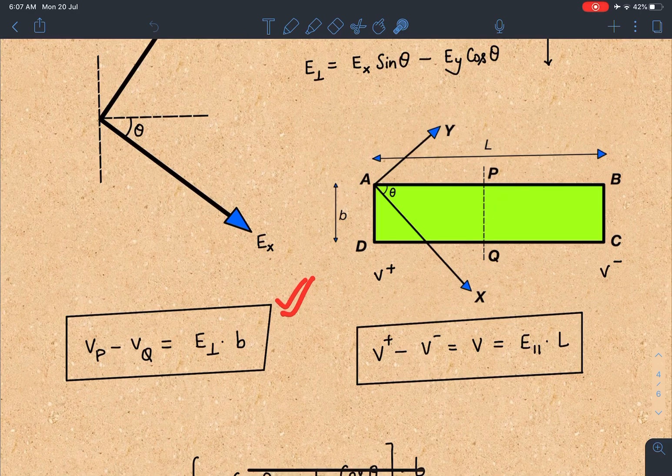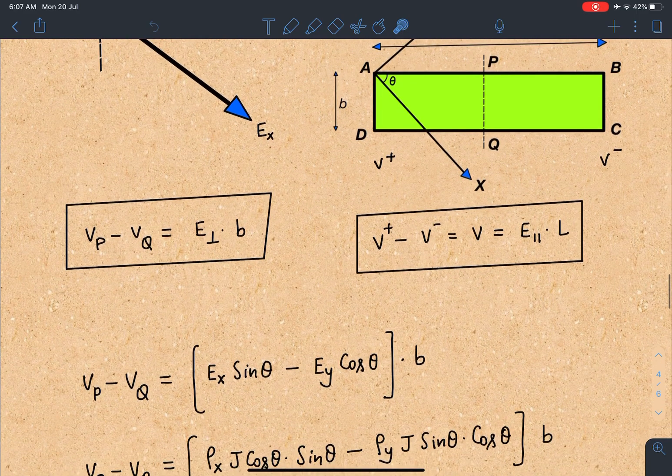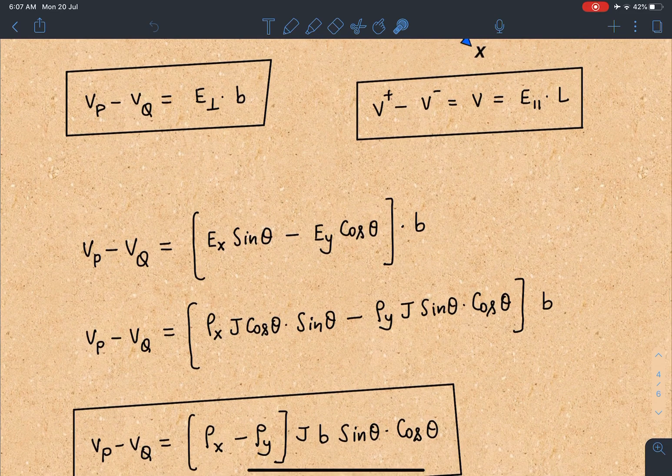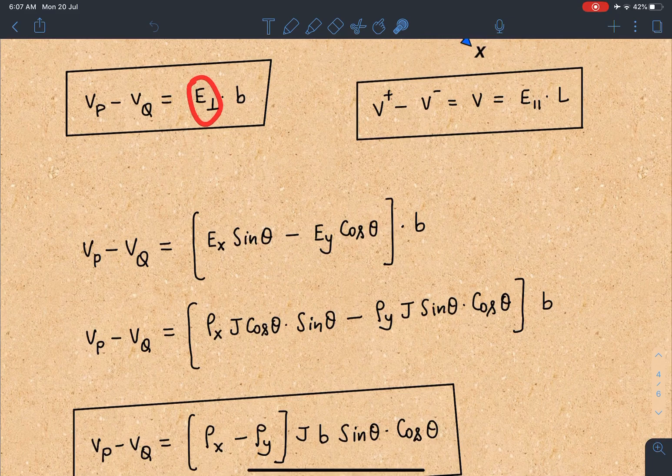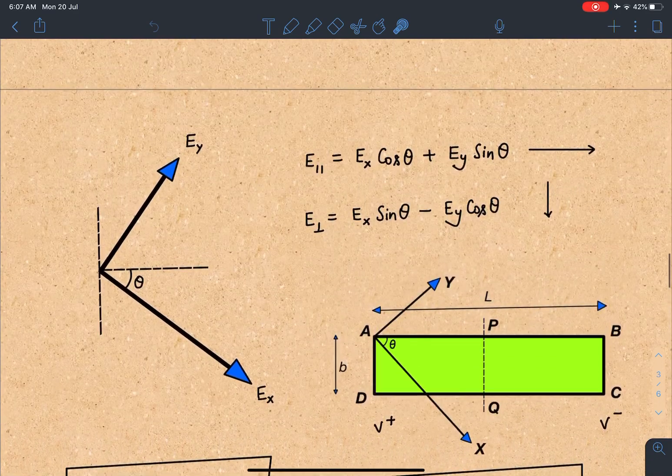Now let's substitute the values of E_parallel and E_perpendicular. Here I'm taking this expression and E_perpendicular value I'm going to substitute: it becomes E_x sin θ - E_y cos θ times b. Now I'm going to substitute value of E_x and E_y which we can see in the previous equation.